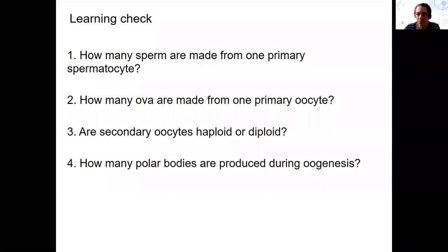We start with a learning check because we haven't done enough this week. So pause and answer these four questions, put them in your homework, and I will go over the answers so that you have them. How many sperm made from one primary spermatocyte? It's going to be four. How many ova are made from one primary oocyte? One. Secondary oocytes are haploid and there are two polar bodies produced during oogenesis.